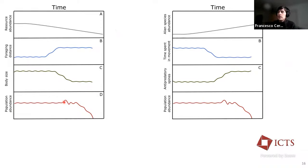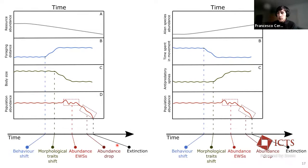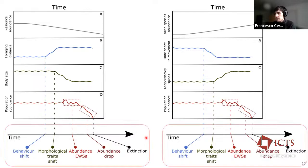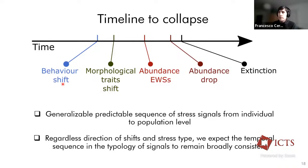Now, if we see these two examples and we project on the time, the starting point of the shifts from the stable condition, we see that there is a pattern in the nature of such signals, stress signals. And we see that the pattern is consistent, despite the two different examples. And this is exactly what we have conceptualized as the timeline to collapse. So this is the predictable sequence of stress signals made by behavioral shift, morphological traits shift, and then potential abundance-based early warning signals before an abundance drop to extinction, that we expect to be consistent despite the different stressor acting on different kinds of populations or species.